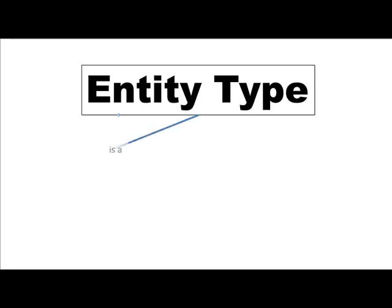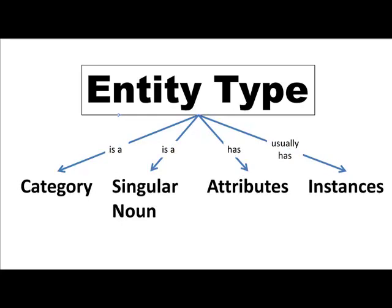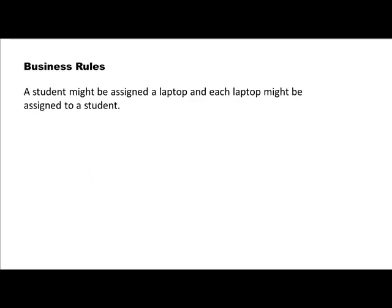So, to summarize: entity type is a category, it's a singular noun, it has attributes, and it usually has instances. Now let's start getting into how we draw entity relationship diagrams.